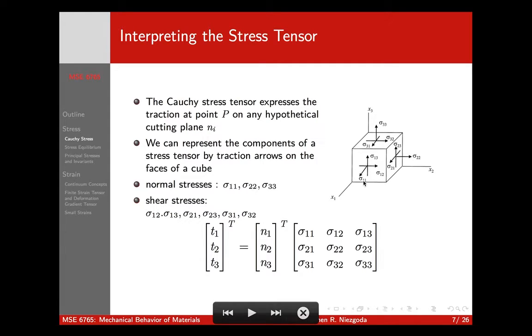We interpret sigma 1,1 as the force on the one surface in the one direction. Sigma 1,2 is the force on the one surface in the two direction. Sigma 1,3 is the force on the one surface in the three direction. As we'll describe, we can compute these tractions as a projection. On any arbitrary surface, if I make a plane along the body diagonal, I can compute the forces on that plane by projecting the forces from these three orthogonal faces onto that plane and resolving.